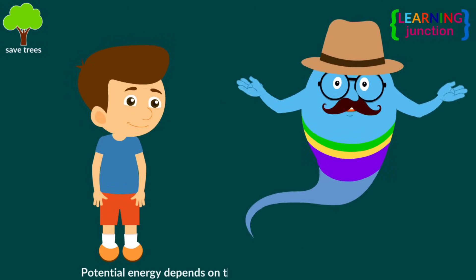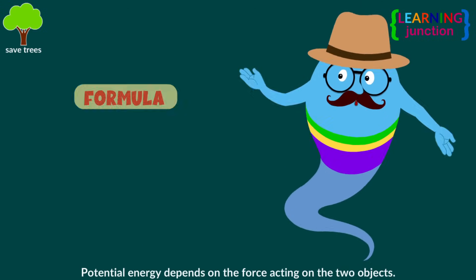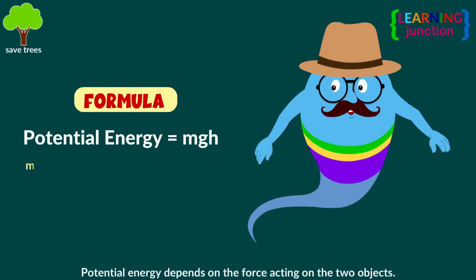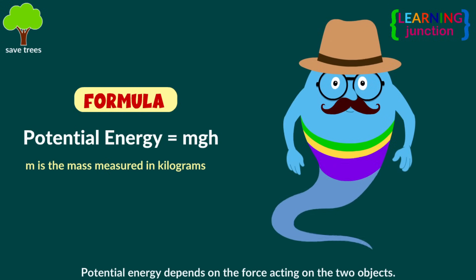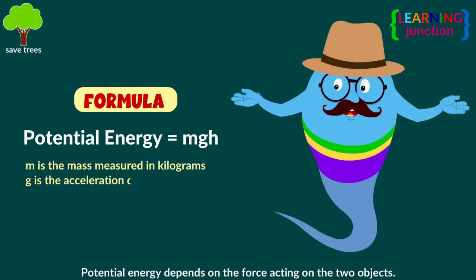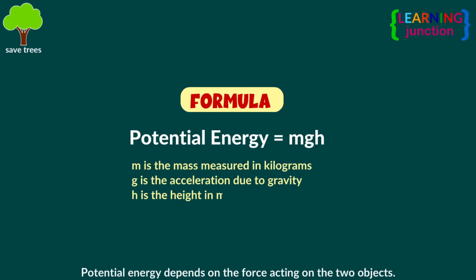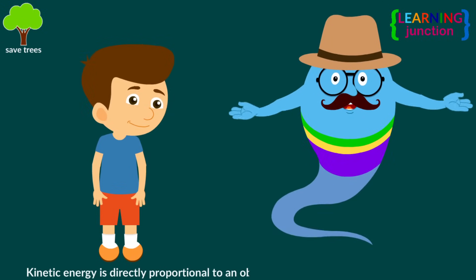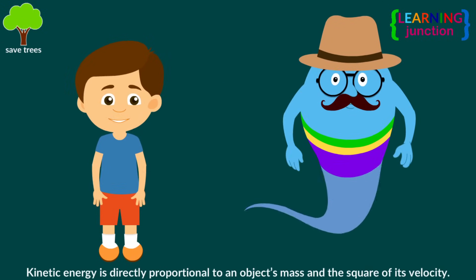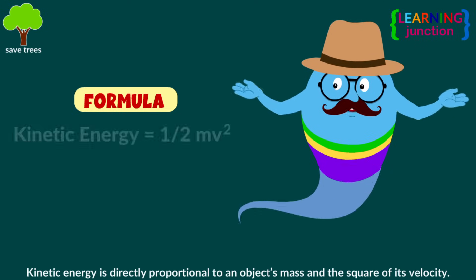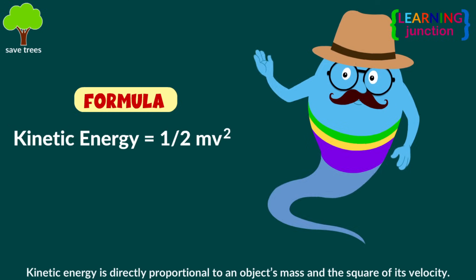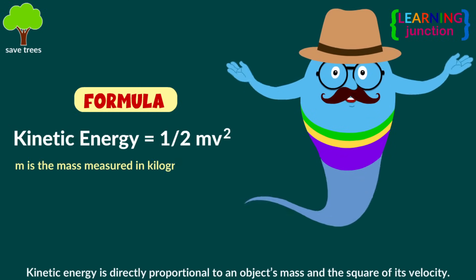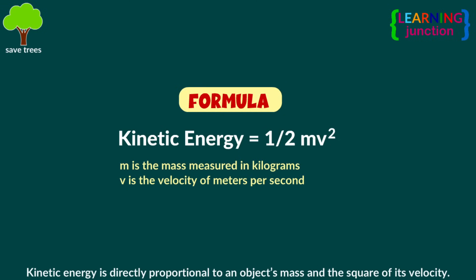Potential energy depends on the force acting on the two objects. The formula is: potential energy equals mgh, where M is the mass measured in kilograms, G is the acceleration due to gravity, and H is the height in meters. Kinetic energy is directly proportional to an object's mass and the square of its velocity. The formula is: kinetic energy equals one-half mv squared, where M is the mass measured in kilograms and V is the velocity in meters per second.